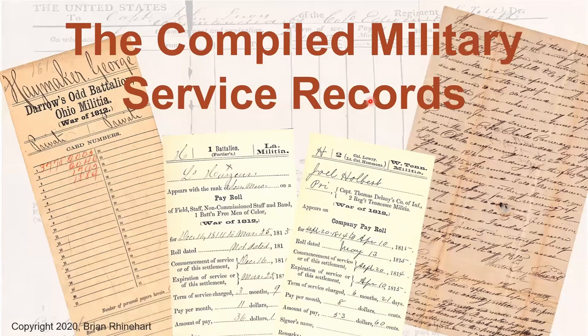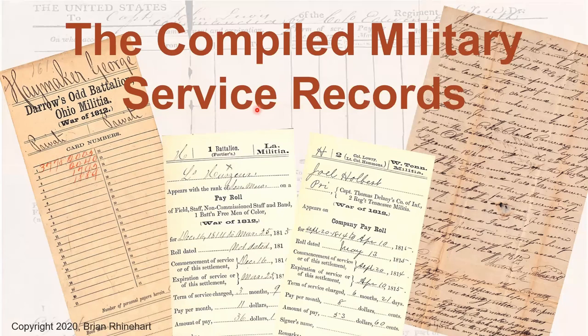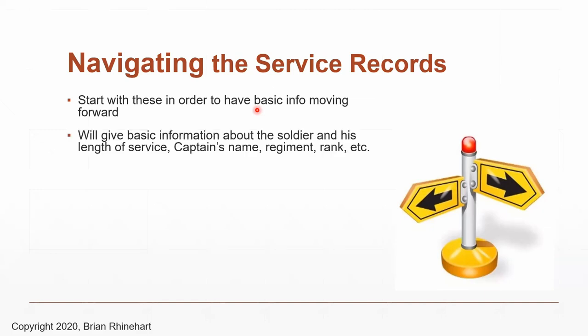Let's look at the compiled military service records — that's a mouthful, but they're often abbreviated CMSR, and I just call them service records. Every time we talk about a new record group, I'll give you tips for navigating them and for where you can find them. These are good records to have — they give you basic information like how long they served, the captain's name, what regiment, and what rank.